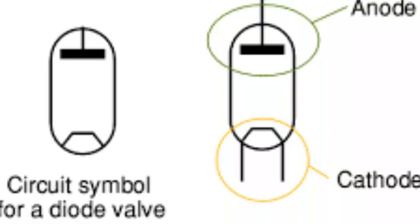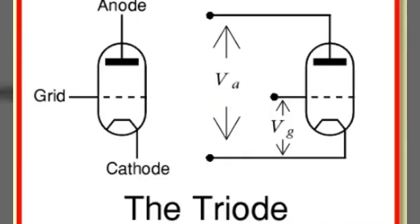It consists of an anode, cathode, and tube, and works as a switch. Always remember: nowadays, semiconductor diodes are used as a diode valve with little voltage. The diode valve is a very costly and very high-voltage device. But these days, semiconductors are used, and semiconductors operate at low voltage.